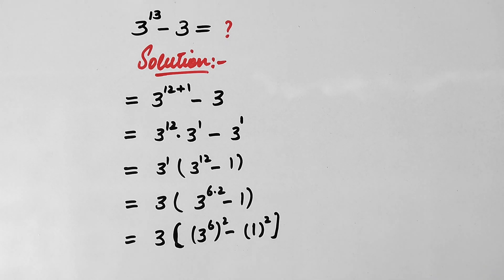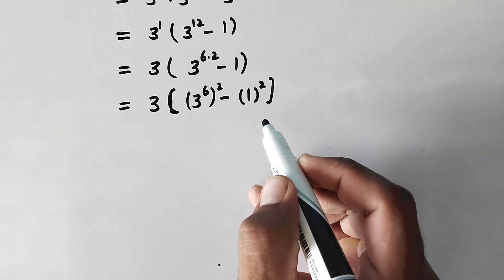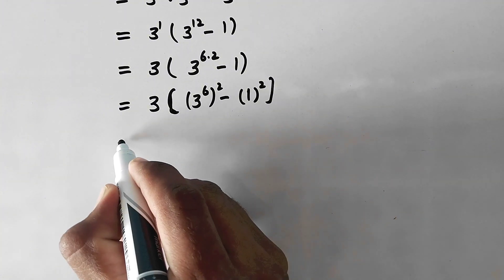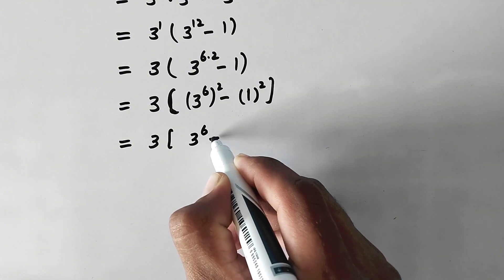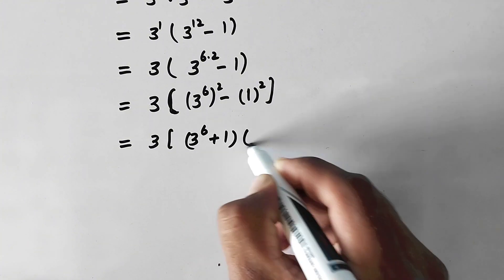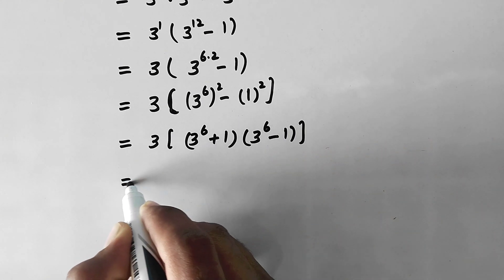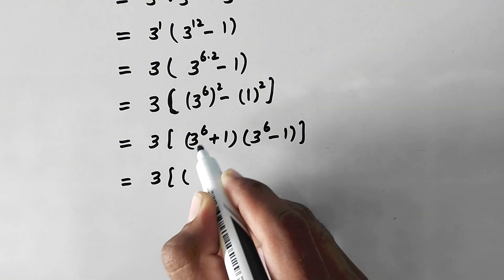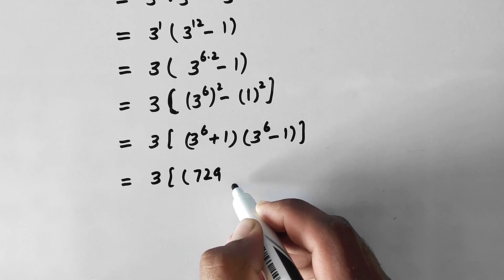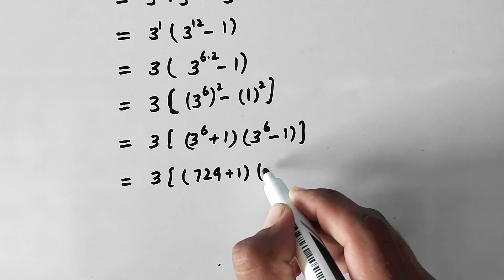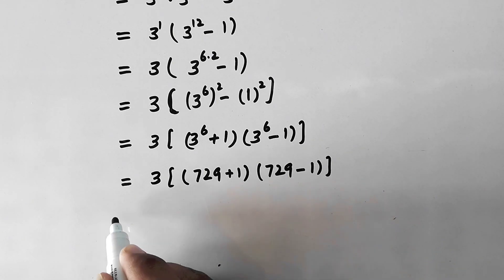Now on this term we can apply the algebraic formula a squared minus b squared equals (a+b)(a-b). Following that formula we write: 3 into (3 to the power 6 plus 1) times (3 to the power 6 minus 1). Since 3 to the power 6 equals 729, this becomes 3 into (729 plus 1) times (729 minus 1).